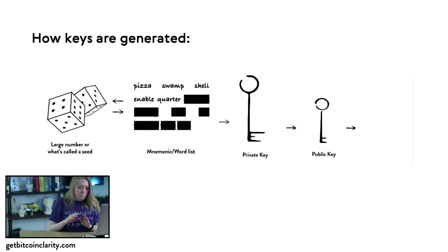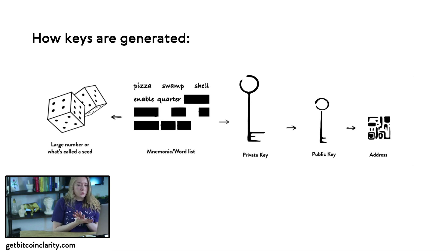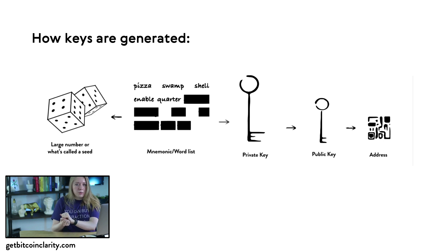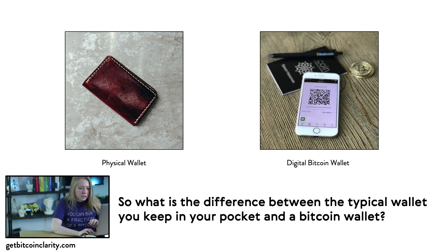You always want to keep your mnemonic private, and preferably offline entirely. If you lose your phone which had your wallet on it, you can regenerate that wallet using your mnemonic, because what you're doing is recreating that exact same random number that was used to produce your private key. Then all of your private keys have your public keys associated with them, and all of your public keys are where people have sent you funds.